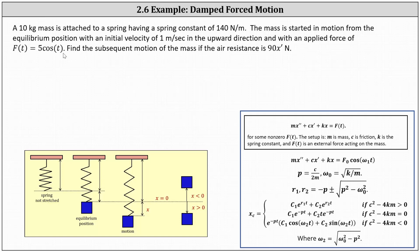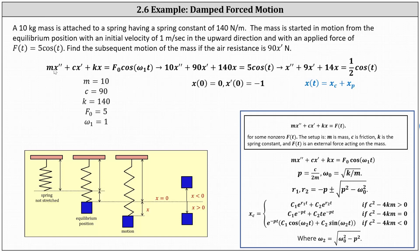Let's begin by listing all the given information. We know the mass m equals 10, the spring constant k is 140. Because the mass is started in motion from the equilibrium position, we have the initial condition x(0) = 0. Because the initial velocity is one meter per second in the upward direction, x'(0) = -1. The external force is F(t) = 5 cos t, indicating F₀ = 5 and ω₁ = 1. Finally, because the air resistance is 90 times x prime newtons, c = 90.